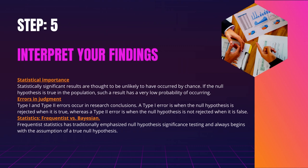Errors in Judgment. Type I and Type II errors occur in research conclusions. A Type I error is when the null hypothesis is rejected when it is true, whereas a Type II error is when the null hypothesis is not rejected when it is false. By selecting an optimal significance level and ensuring high power, you can aim to reduce the risk of these errors. However, because there is a trade-off between the two errors, a delicate balance is required.